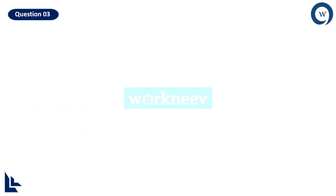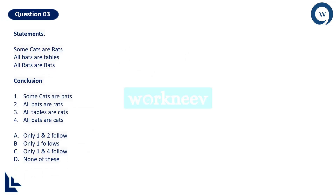The next question: first reverse the statements. Some cats are rats means some rats are cats — not available. Some tables are bats — is it there? No. Some bats are rats — is it there? No. Then we will write the Venn diagram. Some cats are rats means there has to be a cat circle with a common area between cat and rat.